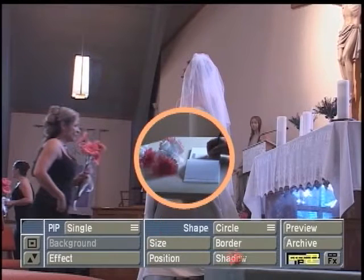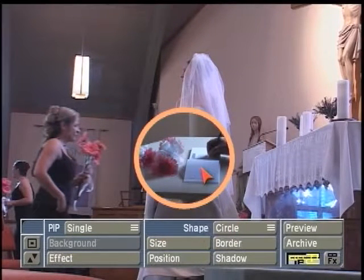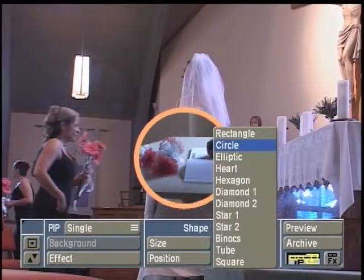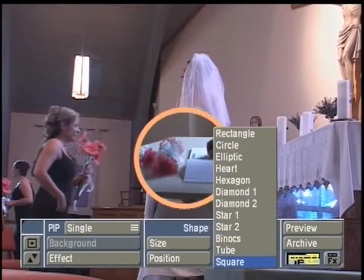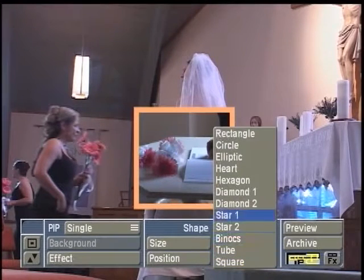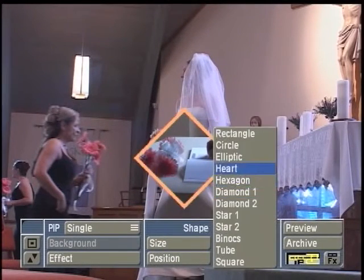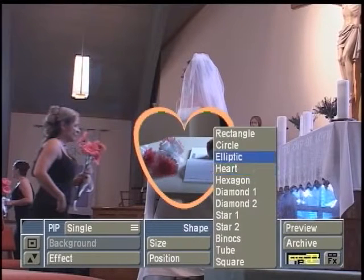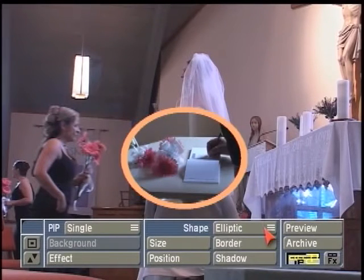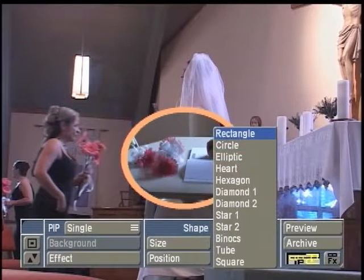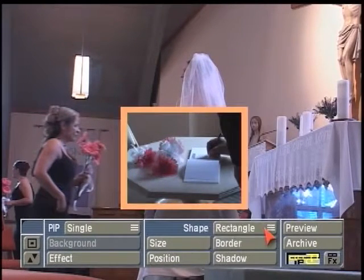Let's talk about the middle section, which is actually affecting the Picture-in-Picture you're currently working with. First is shape. Here we have a list of different types of shapes: square, star shapes, diamond shapes, heart, elliptic, circle, rectangle. I'm going to go ahead and leave this set to rectangle.